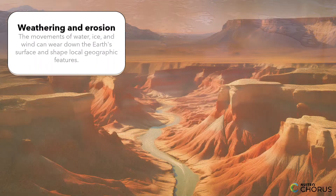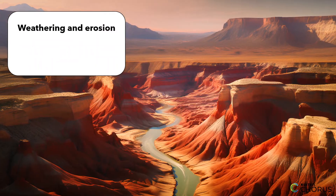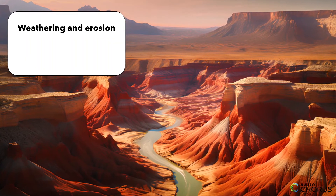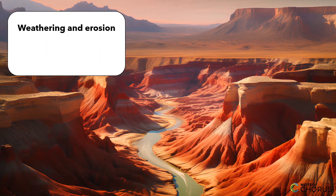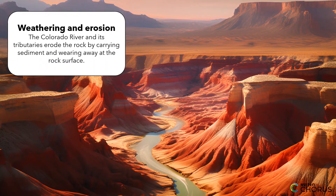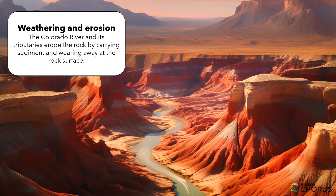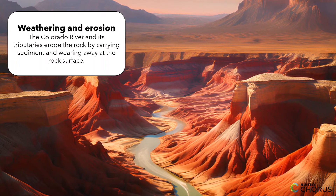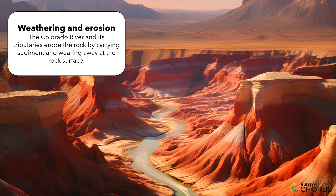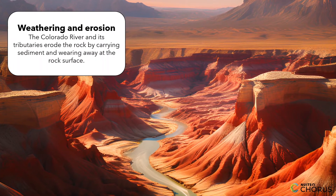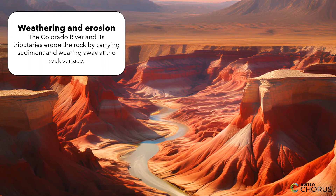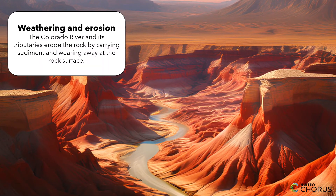A great example of geoscience processes shaping a geographical feature in the United States is the Grand Canyon. One of the main processes that has shaped the canyon is erosion. The Colorado River and its tributaries have been carving through the rocks of the canyon for millions of years, eroding the rock by carrying sediment and wearing away at the rock surface.